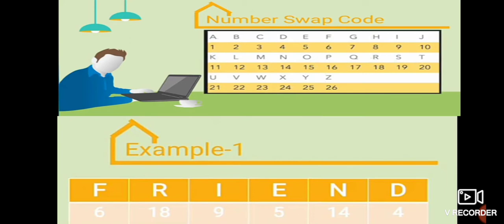Second is number swap code. See here. In English, all the alphabets have assigned numbers according to their position in the alphabet. A is assigned 1, B-2, C-3, D-4, E-5, F-6, G-7, H-8, I-9, J-10, K-11, L-12, M-13, N-14, O-15, P-16, Q-17, R-18, S-19, T-20, U-21, V-22, W-23, X-24, Y-25, Z-26.